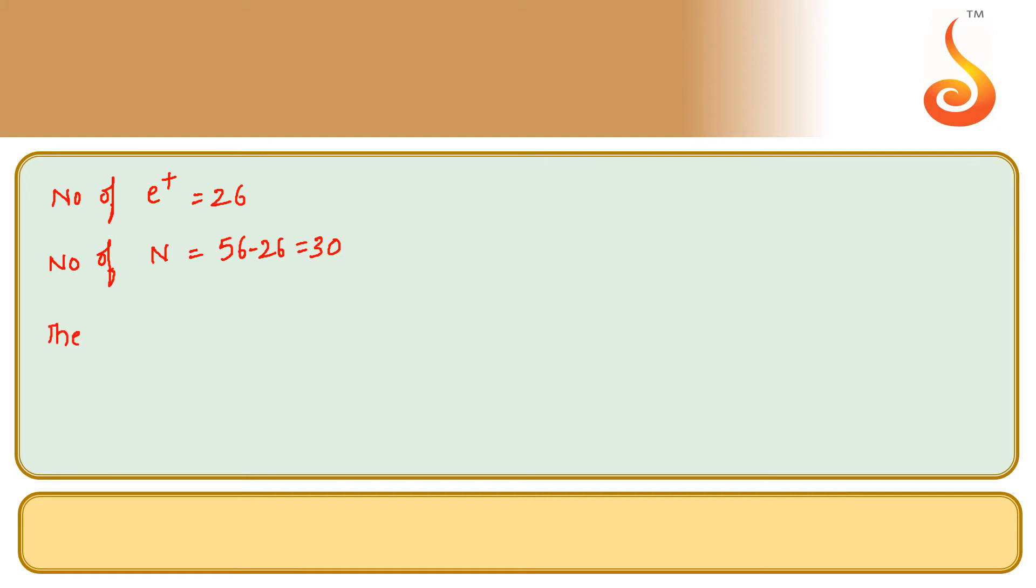The binding energy of Fe-56 is equal to 26 protons into mass of each proton, 1.00783 atomic mass units, plus 30 into 1.00867 atomic mass units, minus the mass of the iron which is 55.9349 atomic mass units.